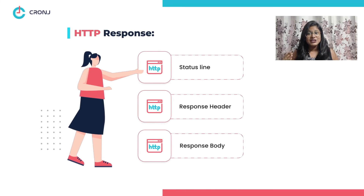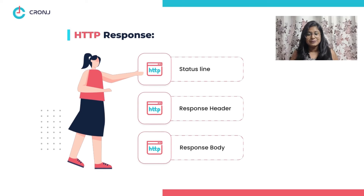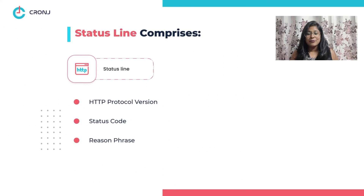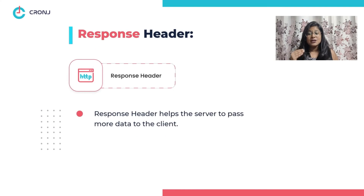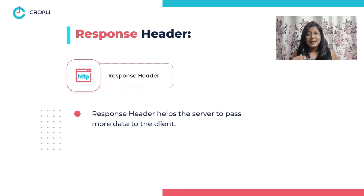What are the various parts of an HTTP response? Similar to HTTP request, HTTP response also has three main elements: the status line, the response header, and the response body. The status line comprises the HTTP protocol version, status code, and reason phrase. The response header helps in passing additional information to the client from the server — this is a reverse action of the request header.